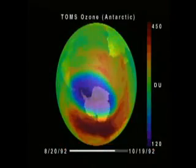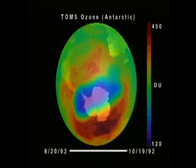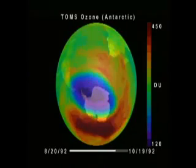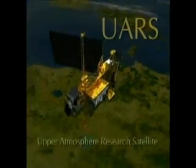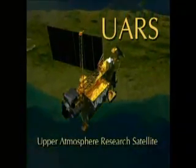Why is the ozone changing? Although the appearance of the Antarctic ozone hole was surprising, scientists had been predicting significant changes in the ozone layer since the 1970s. In response to mounting public concern, NASA began construction of the first satellite dedicated entirely to understanding the chemistry and dynamics of the ozone layer. Launched in 1991, this satellite is called the Upper Atmosphere Research Satellite, UARS.